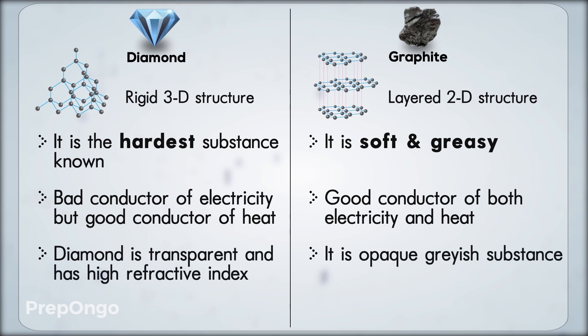Now diamond is transparent and has high refractive index so it is used in gemstones and jewellery. Whereas graphite is opaque gray substance that means it has no refractive index.